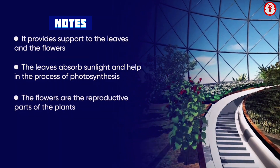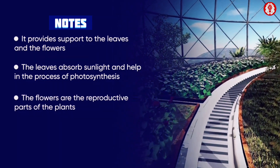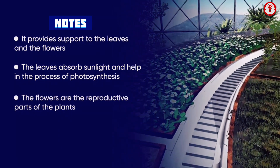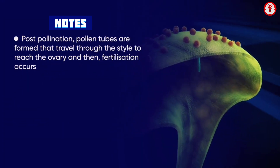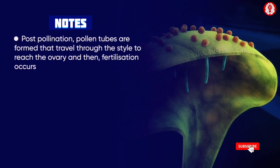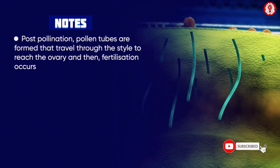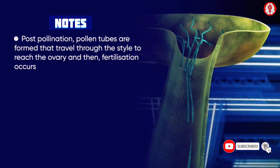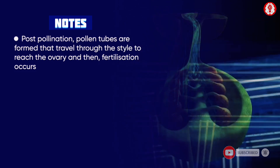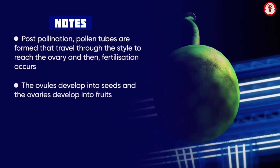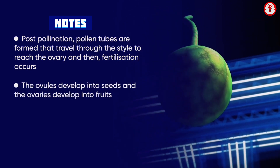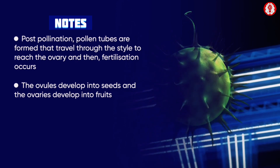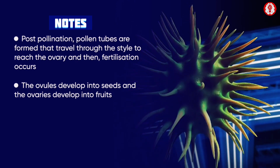There are many different varieties of flowers having various colors. After pollination, the pollen tube grows through the style and fertilization occurs. After this, the ovules develop to form the seeds and the ovary develops to form the fruit.